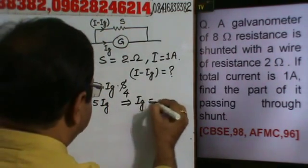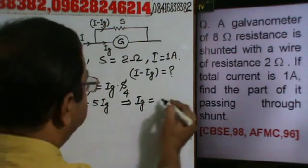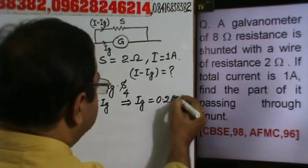Ig will be equal to 1 by 5, that is 0.2 ampere.